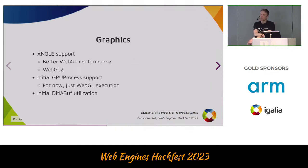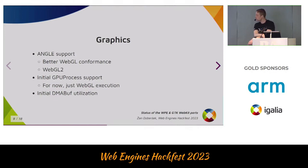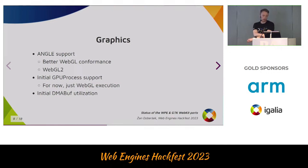On the graphics side, recent developments include ANGLE support, through which we benefit immediately with better WebGL conformance as well as WebGL 2 support. There is also initial GPU process support, which for now is used only for WebGL execution — it's somewhat experimental but in progress. Both of these are based on DMA-BUF. DMA-BUF is effectively a Linux-specific buffer management mechanism, which will be covered in more detail tomorrow in the breakout session in the morning.